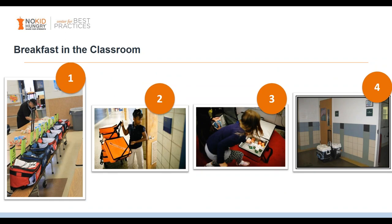In pictures, here's what breakfast in the classroom looks like step by step: picture one shows rolling coolers lined up as cafeteria staff prep them; picture two shows a student delivering breakfast to the classroom using student volunteers; picture three shows a student picking up their reimbursable meal components; and picture four shows the rolling cooler being returned to the cafeteria — either by students or cafeteria staff.